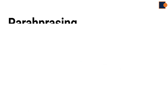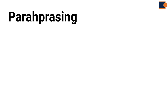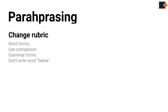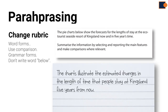The next stage is paraphrasing. To do it effectively, you may need to change word forms using synonyms and grammar form from the rubric. Here is a quick reminder: do not include words directly below in your introduction. For example, 'five years time' is written as 'five years from now' — the instruction is written differently, but the meaning is the same.